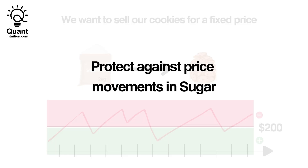We actually already encountered this indirectly in previous videos without a formal definition. For example, in our video about futures, the cookie business owner bought a futures contract to lock in a fixed price for sugar. In other words, the cookie business owner protected themselves against price movements in sugar.